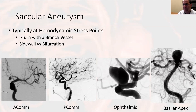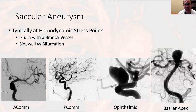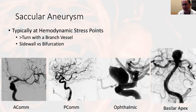A saccular aneurysm typically occurs at a hemodynamic stress point — a turn — and usually there's a branch vessel associated with that turn. Typical examples include the ACOM, PCOM, ophthalmic aneurysms, and a basilar apex aneurysm, which is a true bifurcation aneurysm. It's important to emphasize that these are hemodynamic phenomena occurring at hemodynamic stress points with a branch usually associated with them.